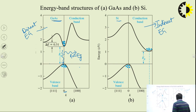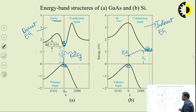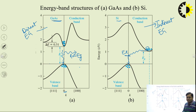For indirect semiconductors like silicon, if an electron in the conduction band wants to recombine, it first transfers its momentum to a defect level Et. After this momentum transfer, it makes the transition to the valence band, and the energy is lost in the form of heat during the transition from Et to the valence band. So gallium arsenide is a direct band gap material and silicon is an indirect band gap material.